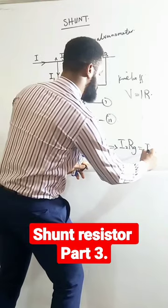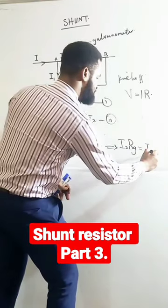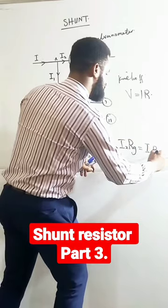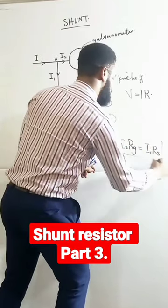And the current of the shunt is I1 multiplied by the resistance of the shunt. So this is what it is.